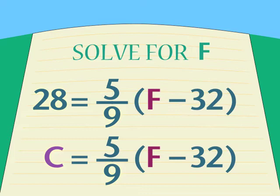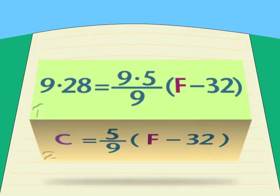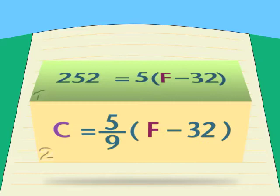Watch how we solve both problems at the same time and in the same way. Remember, we're solving for F. And the only difference is that C equals 28 in problem one, and C is just C in problem two. We find the least common denominator. It's 9. So we multiply both sides by 9 and cancel out to get rid of the fraction. Now, simplify the two problems the same way. 9 times 28 becomes 252. But 9 times C is just 9C.